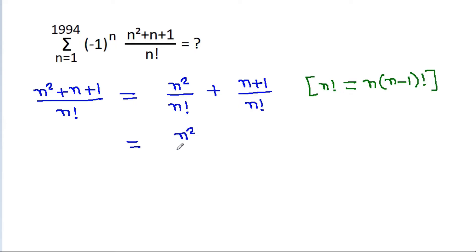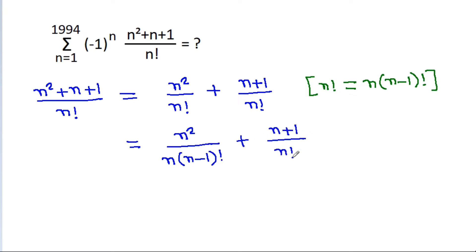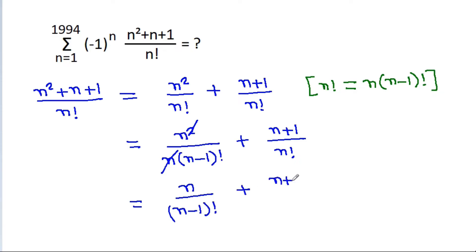So n²/n! becomes n / (n-1)! when one n cancels, giving us n / (n-1)! plus (n+1) / n!.